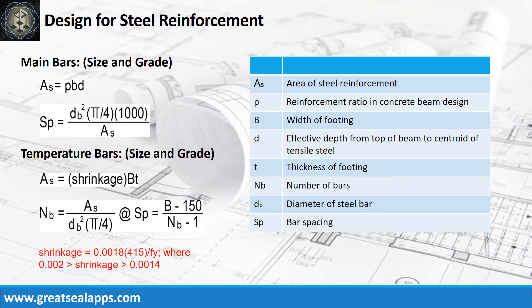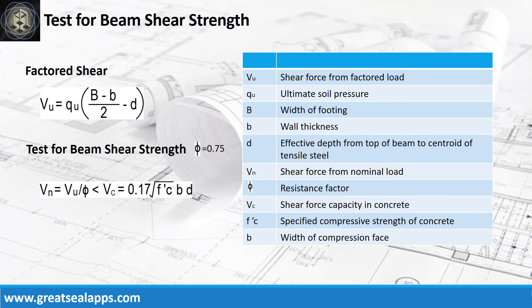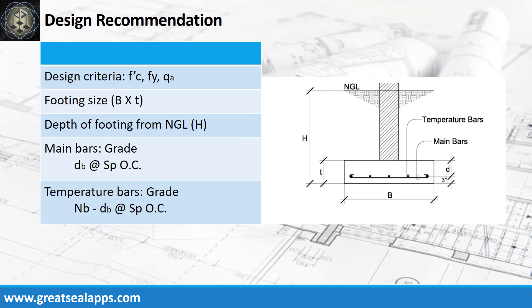Finally, test for shear strength by getting the nominal shear force from the factored shear force, which should be less than the shear strength capacity of the concrete. The design recommendation format includes: design criteria, footing size, depth of footing from natural grade line, main bars, and temperature bars.